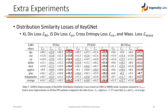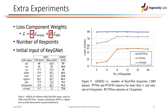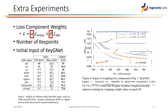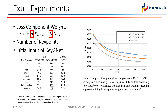We also conducted ablation and tuning experiments. We experimented with different distribution similarity metrics and found that Wasserstein distance boosts performance more compared to others. Experiments also extend to hyperparameter configurations, including the impact of the initial input, number of keypoints, and the loss component weights.